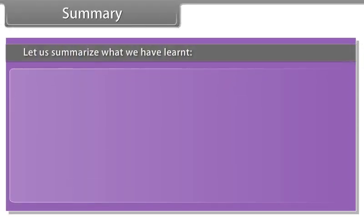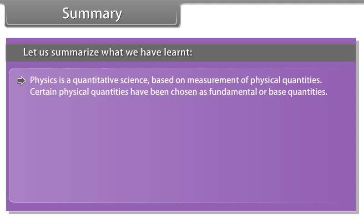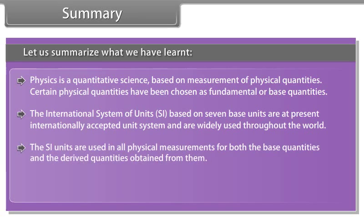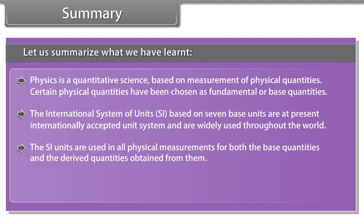Summary: Let us summarize what we have learned. Physics is a quantitative science based on measurement of physical quantities. Certain physical quantities have been chosen as fundamental or base quantities. The International System of Units (SI), based on seven base units, are at present internationally accepted unit systems and are widely used throughout the world. The SI units are used in all physical measurements for both the base quantities and the derived quantities obtained from them. Physical measurements are usually expressed for small and large quantities in scientific notations with powers of ten.